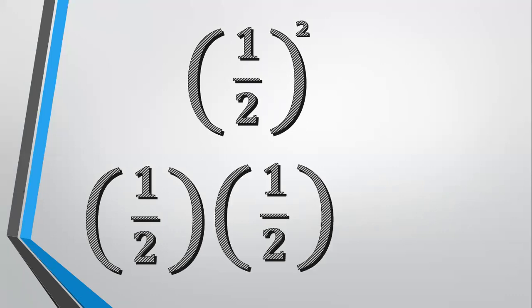Multiply the numerator: 1 times 1, and multiply the denominators: 2 times 2. So, 1 times 1 equals 1, and 2 times 2 equals 4. So the answer is 1 fourth.